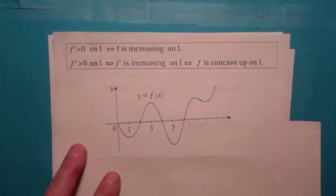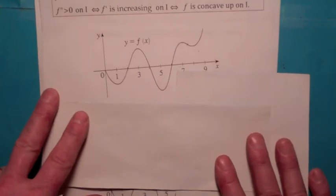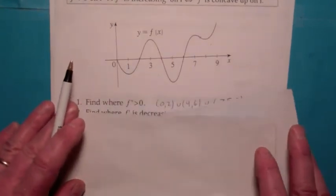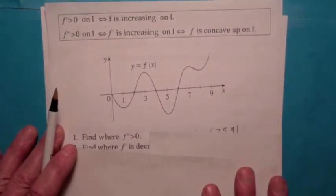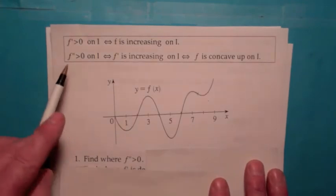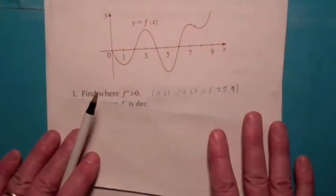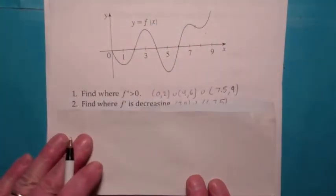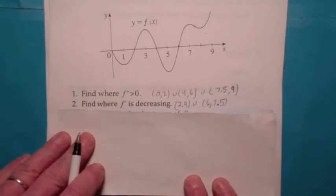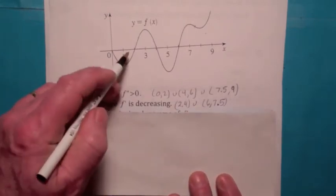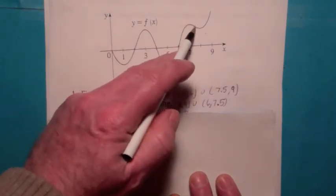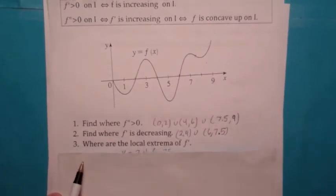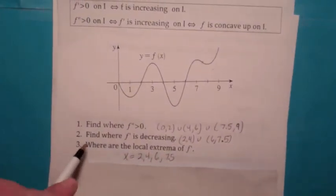Now instead of giving you the graph of f prime, I'm going to give you the graph of f. Find where f prime is greater than zero. f prime is greater than zero wherever f is concave up — that's from zero to two, from four to six, and from about 7.5 to nine. f prime is decreasing whenever f is concave down — from two to four and from about six to 7.5. The local extrema of f prime are the inflection points of f, so at two, four, six, and 7.5.